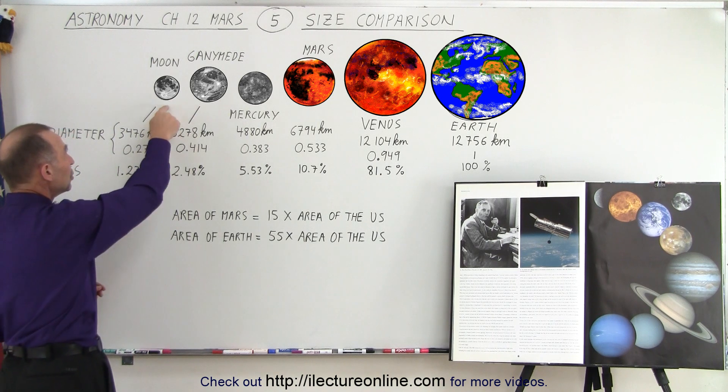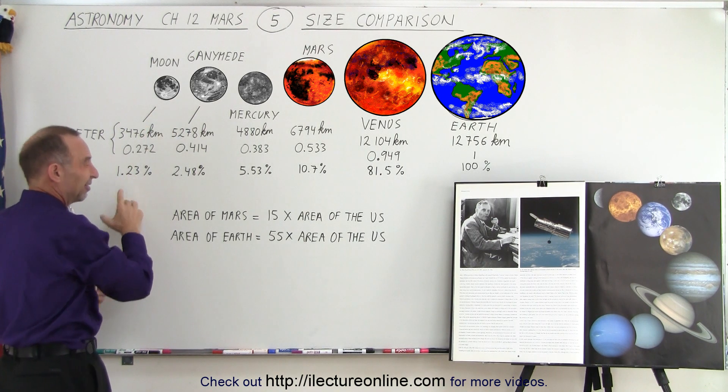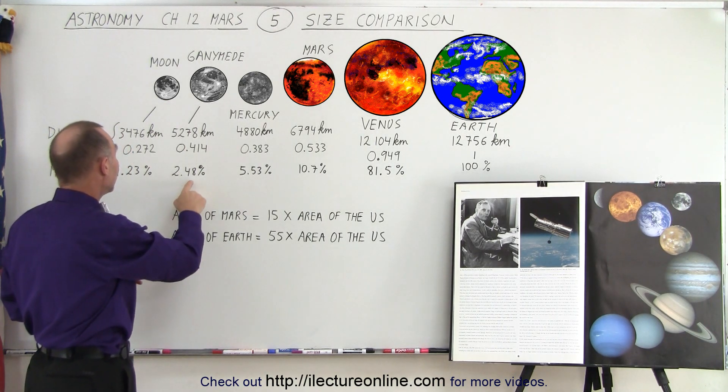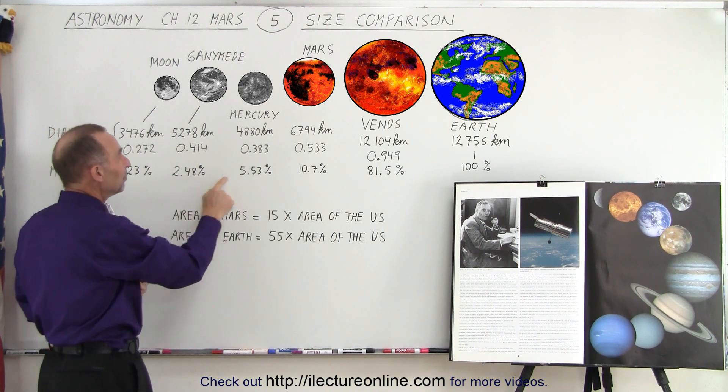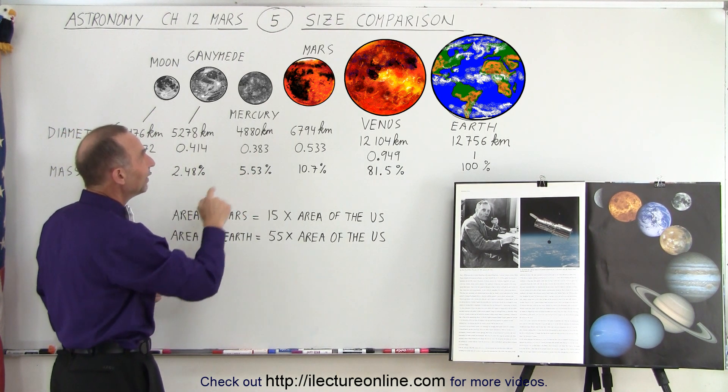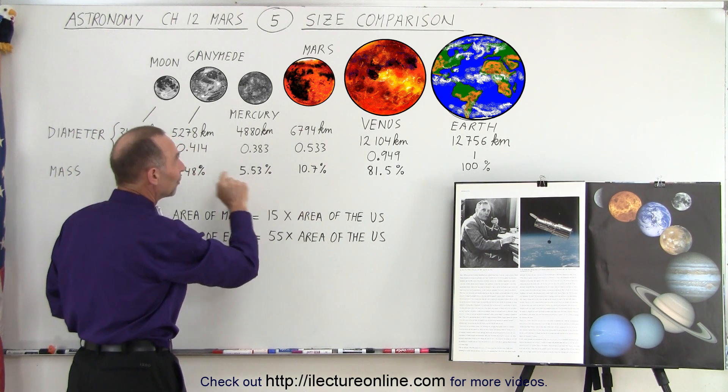Mass-wise, you can see that the moon is barely 1% the mass of the Earth. It's about 1 to an 80 ratio. But Ganymede is about twice as large as the moon in mass, and Mercury is about twice as large in mass compared to Ganymede. And then Mars is about twice as big in size mass-wise compared to Mercury.